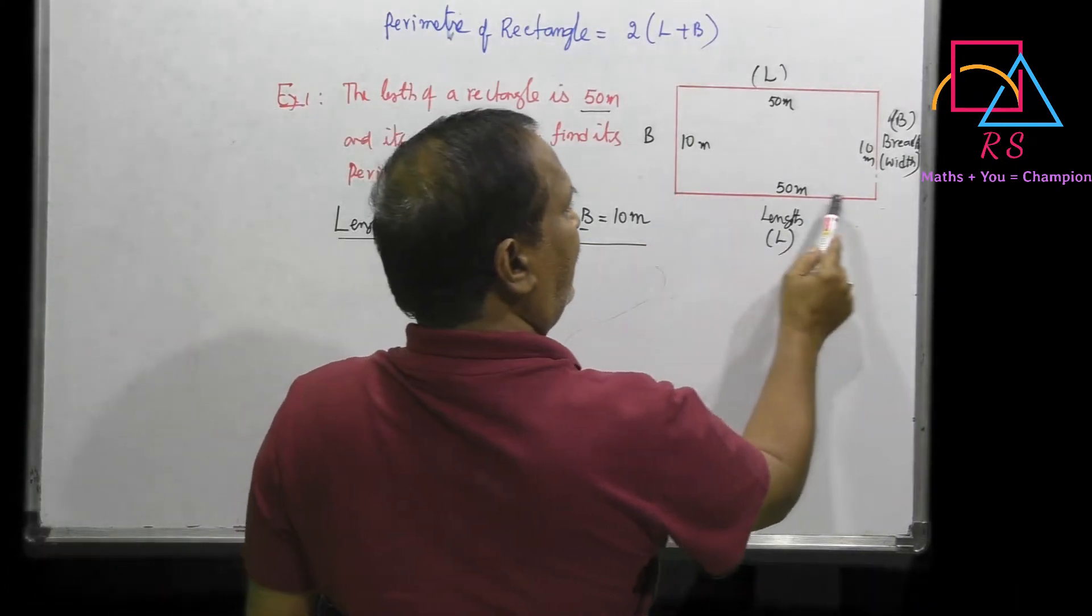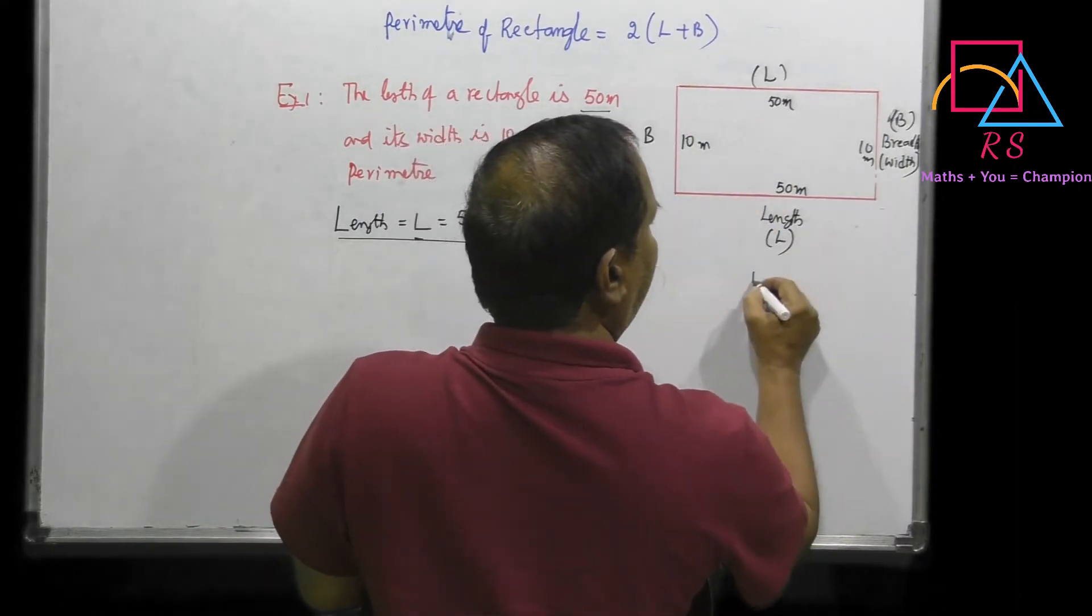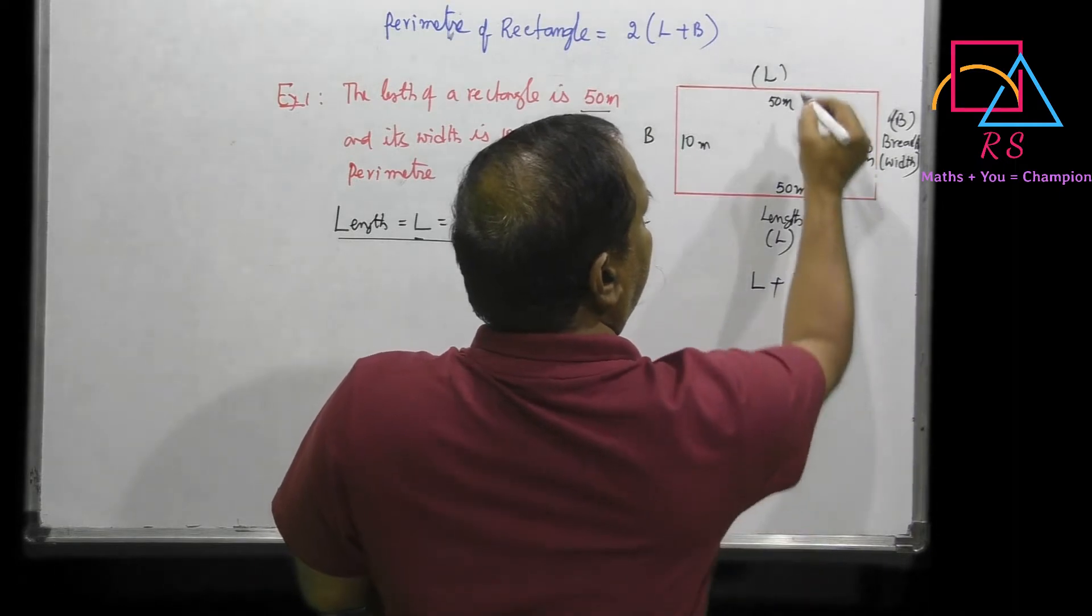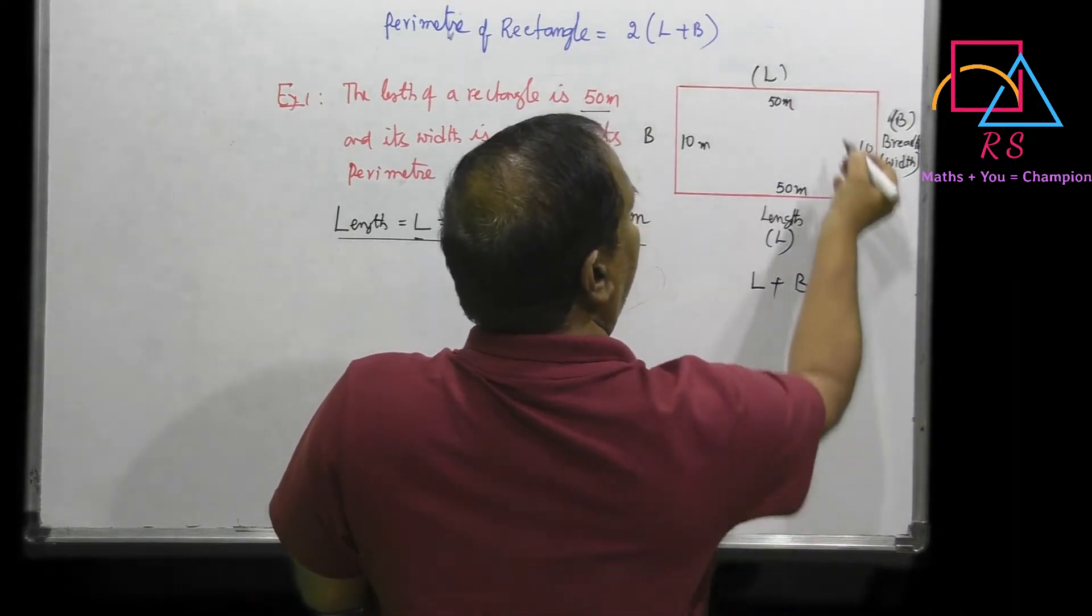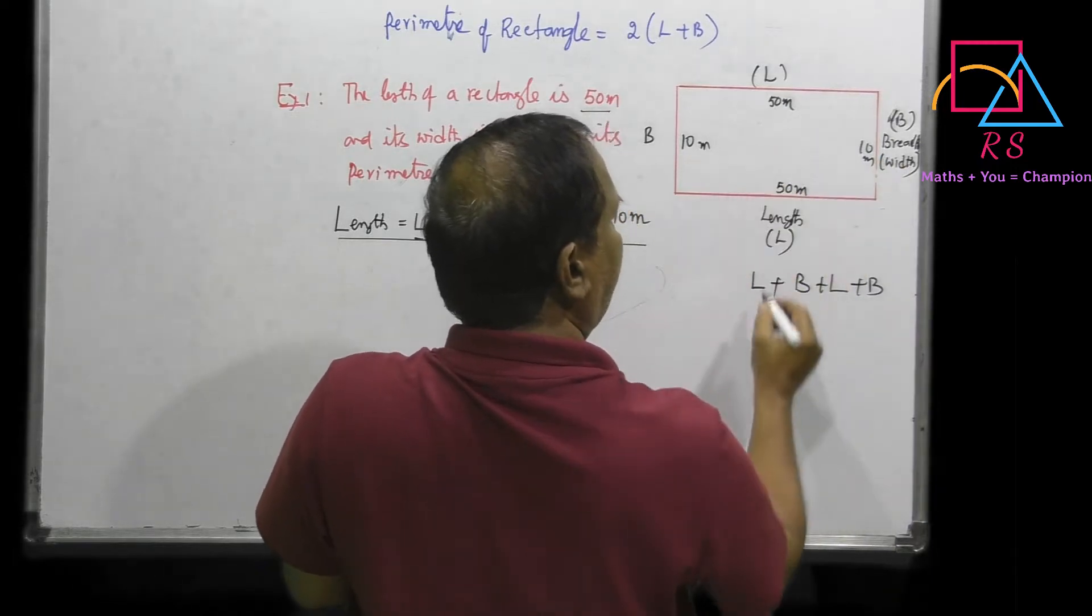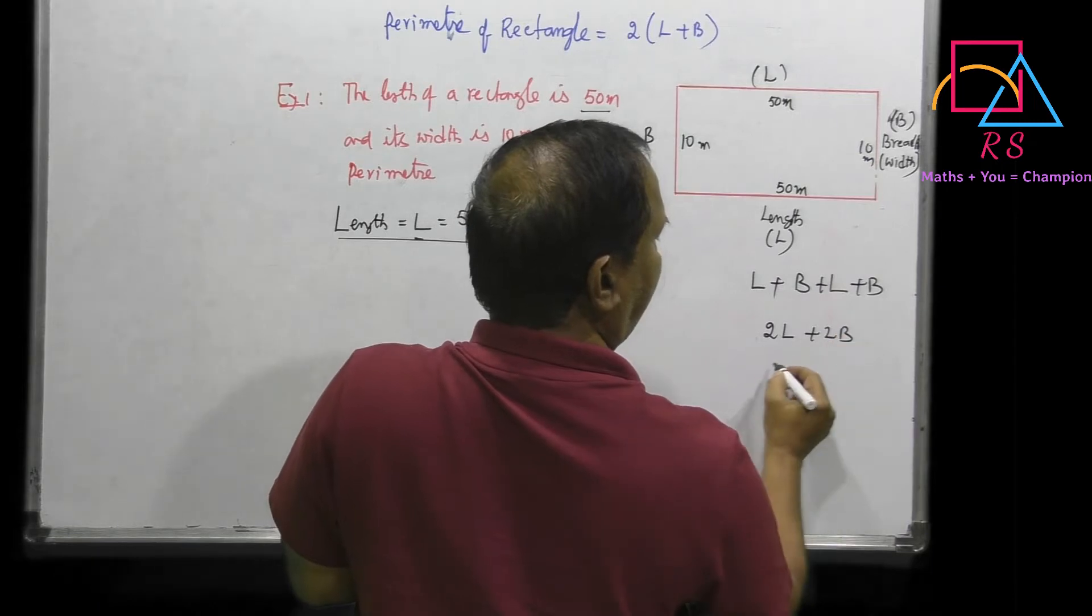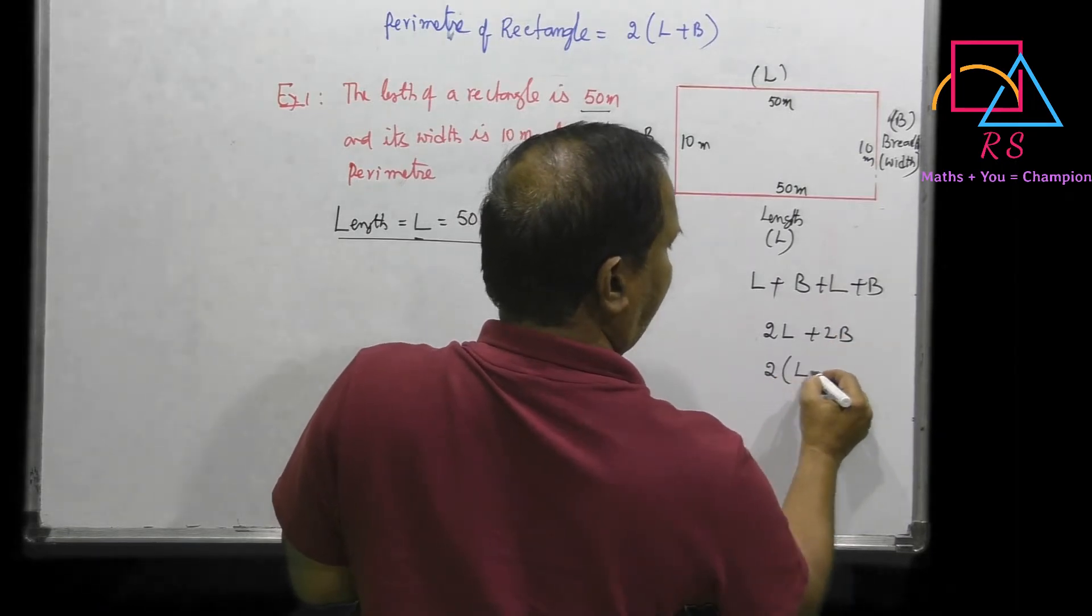Perimeter means the length of all the boundaries. That means one length plus one breadth plus one length plus one breadth. There are two lengths and two breadths, so if you take out 2 as common, it becomes 2(L+B).